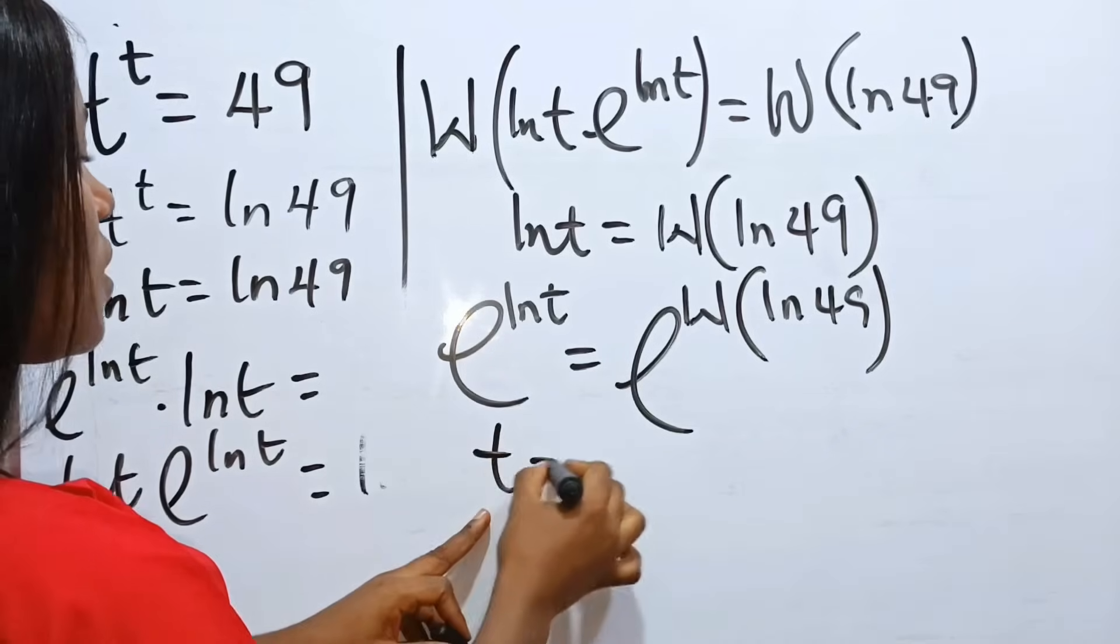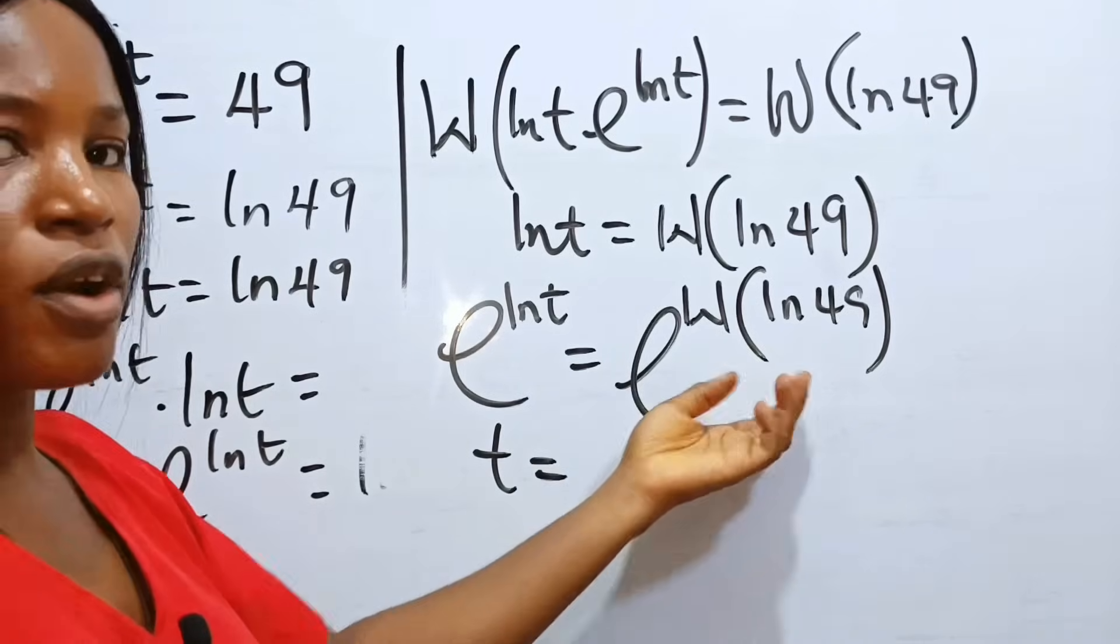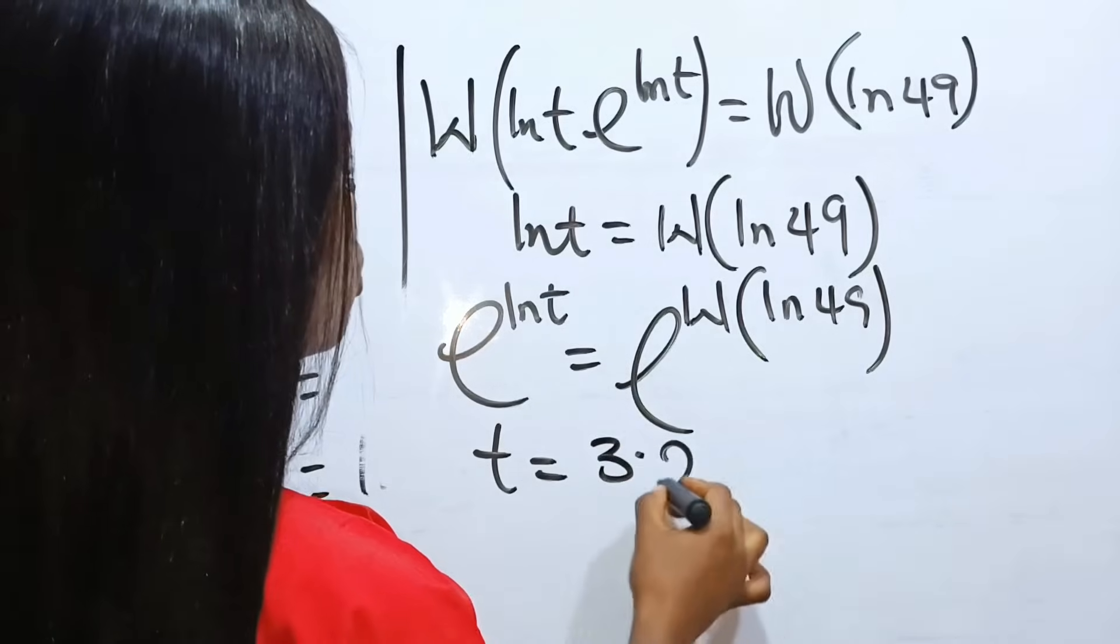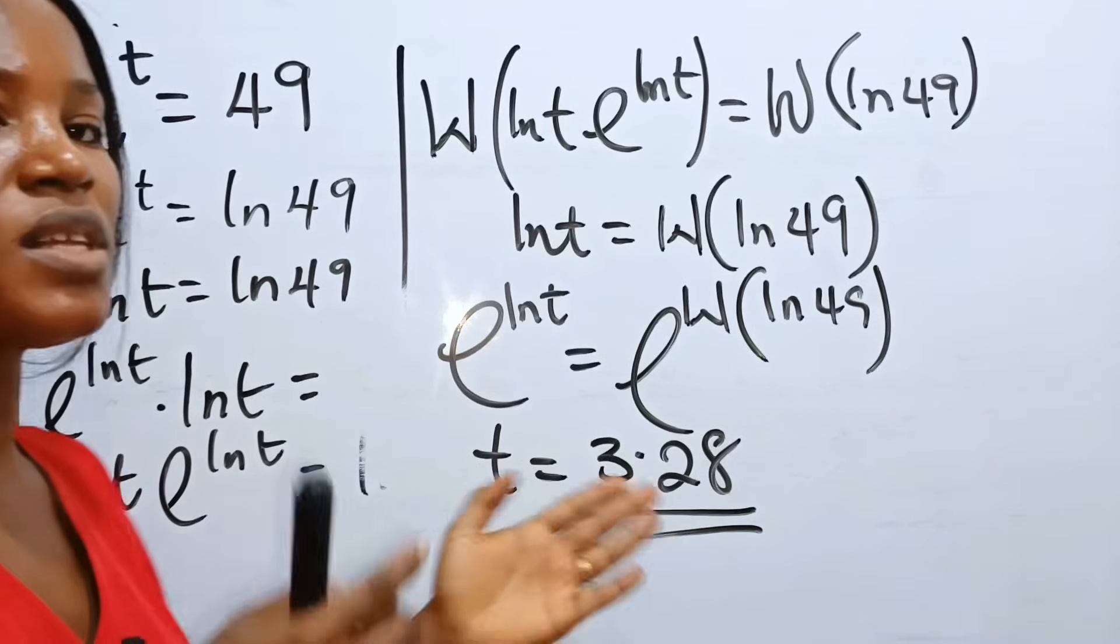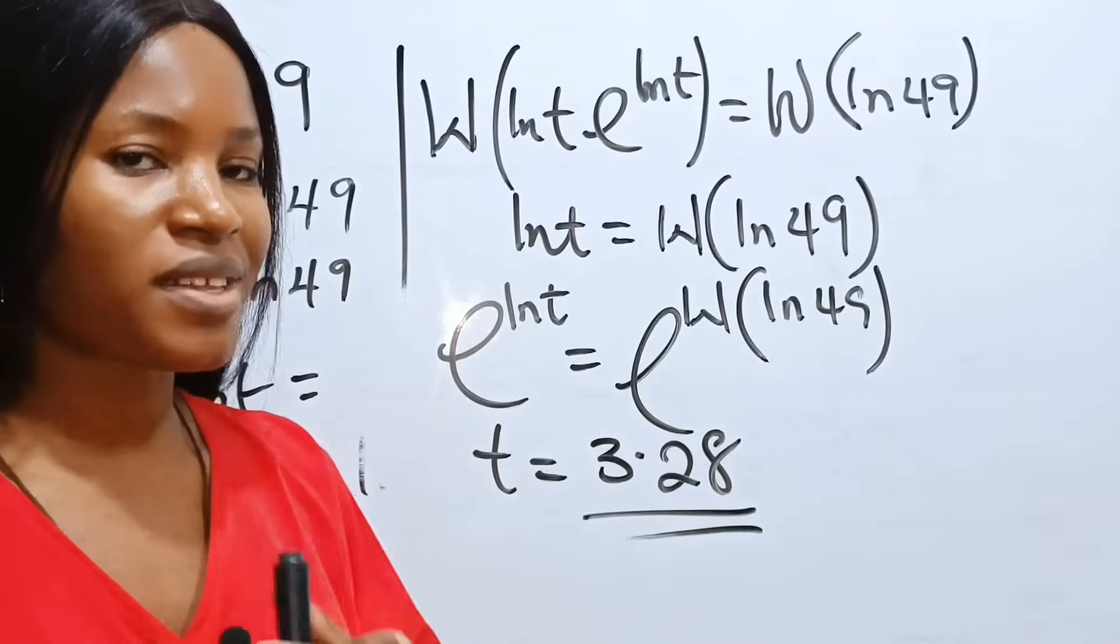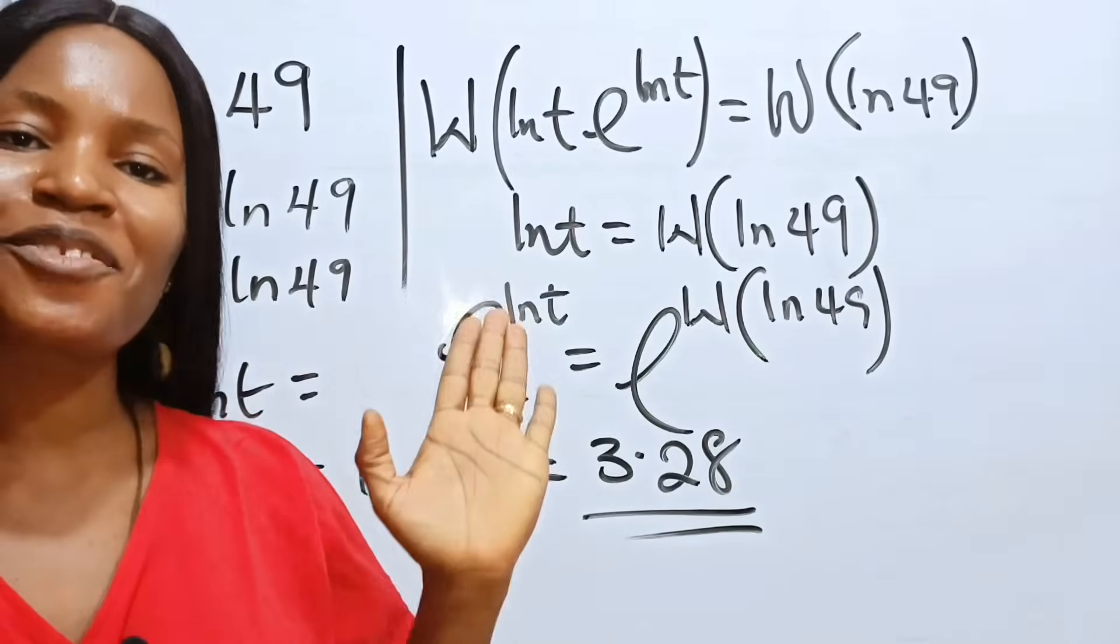So, this side, we now have t is equal to... Now, the value of this will give you 3.28 to two decimal places, which you can see is between 3 and 4, just like we predicted. I love you so much. Thank you for watching.